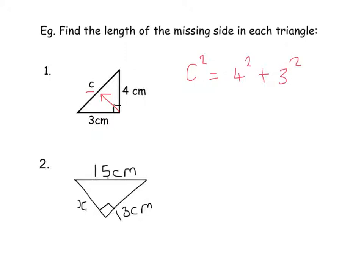So if we work that out, 4 squared is 4 times 4, which is 16, and 3 times 3 is 9. Then you add those together, and you get 25. So to find out what c is, we do the square root of 25, which is 5. So c would be 5 centimeters in this example.